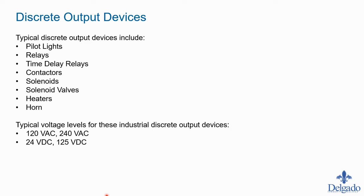The control voltages for inputs and outputs don't have to match. You could find circumstances where your control voltage for outputs is different from your inputs. For instance, some output devices might only be available at 24 volt DC while your inputs run on 120 volt AC, meaning you'd need a special power supply just for that one output.